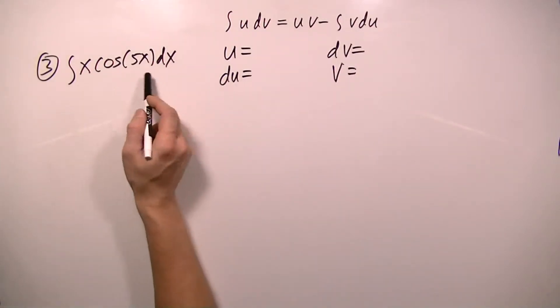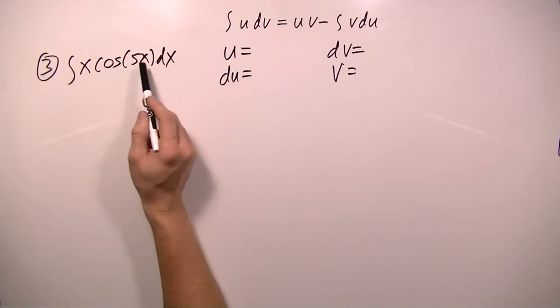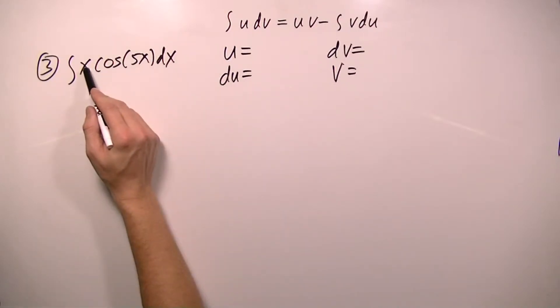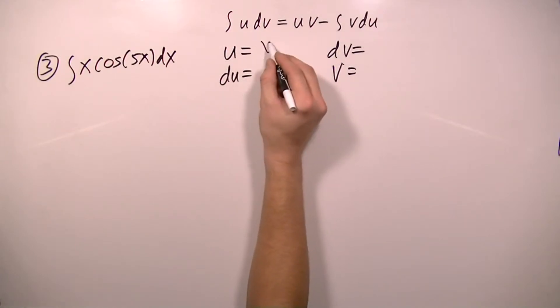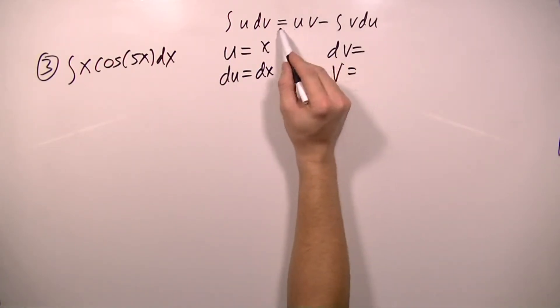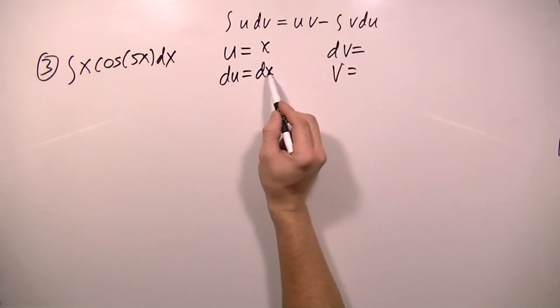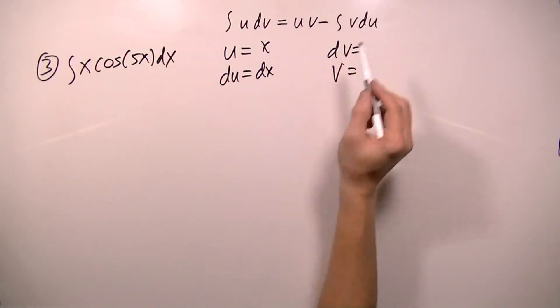So in an integral like this, if this x wasn't here, I could easily take the integral of cos 5x using just a simple substitution. So the idea here is that I want to get this x to go away. So I'm going to make u equal x so that du will equal dx. And when I use my formula for integration by parts, what I'm left with when I take the integral, du will go away and it will just be dx. So there won't be any x left when I go to take this integral.